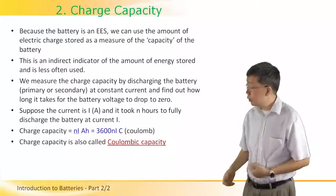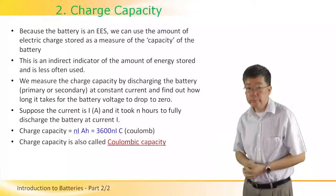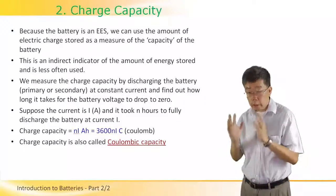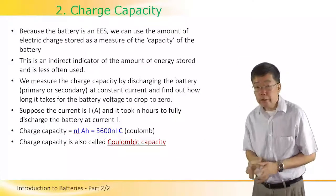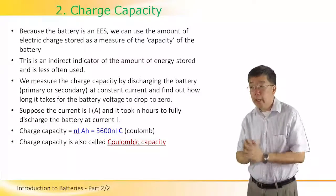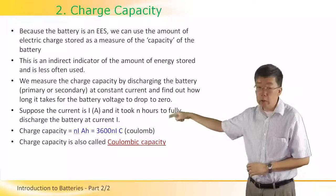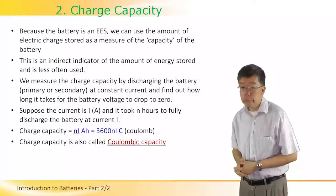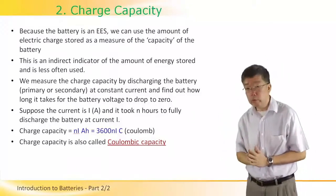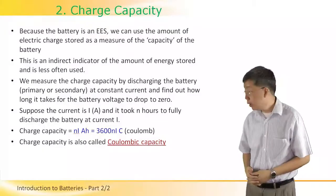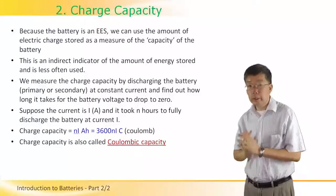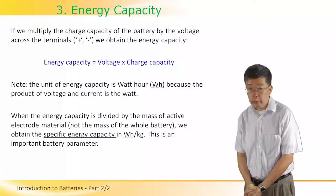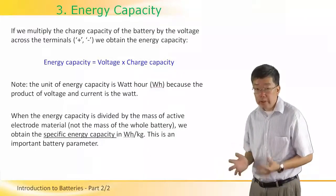We measure how long it takes for the battery to become fully discharged — that is, until the VOC equals zero — and simply multiply the current in amperes by the time in hours to get the charge capacity. The charge capacity is measured in ampere-hours. To convert to coulombs, multiply by 3600, since there are 3600 seconds per hour. The charge capacity is also known as the coulombic capacity.